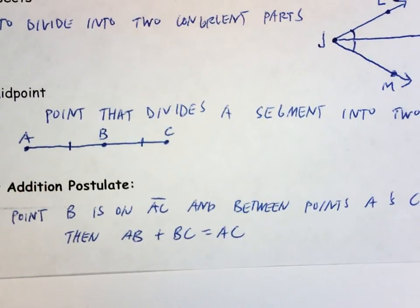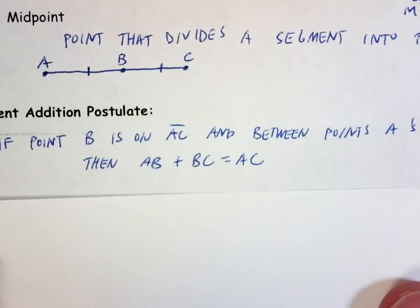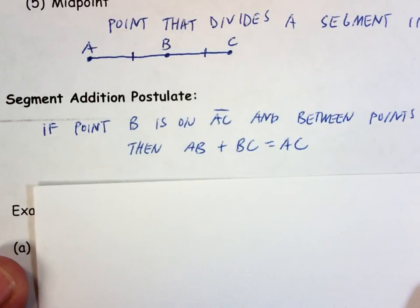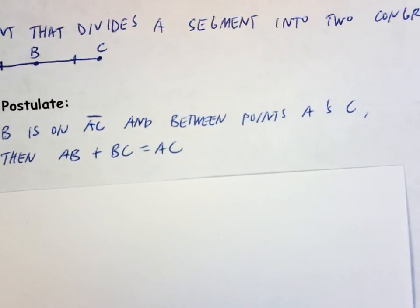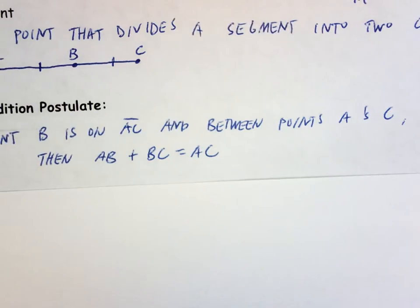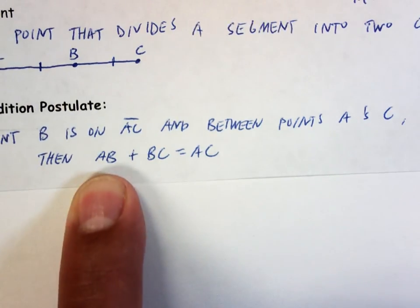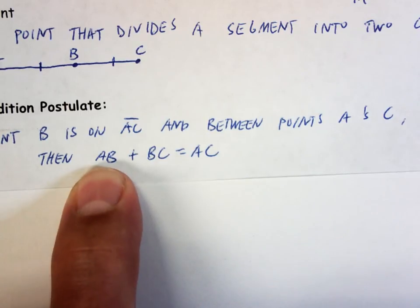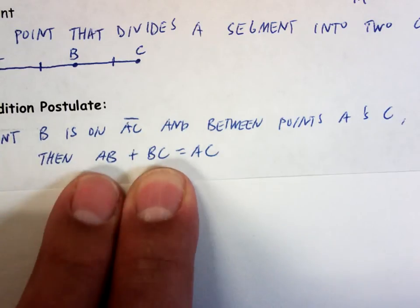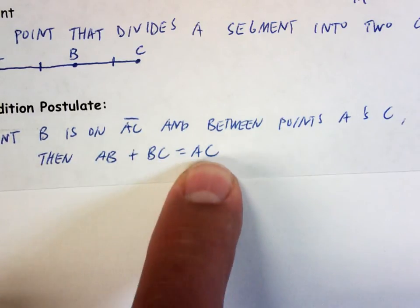Segment addition postulate, this is kind of like my example about San Antonio to San Marcos. If point B is on AC, and between points A and C, then AB + BC = AC. Again, Austin to San Antonio through San Marcos, if that's a straight line. This is how far it is from Austin to San Marcos. This is how far it is from San Marcos to San Antonio. If I add those two up, it must be equal to how far it is from Austin to San Antonio.